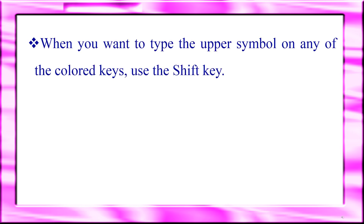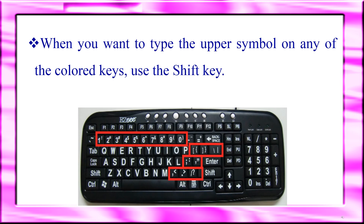When you want to type the upper symbol on any of the keys, use the shift key. For example, on keys from one up to zero, we have numbers and some symbols. On keys like bracket, slash, colon and semicolon, we have two characters — use shift to type the upper symbol.